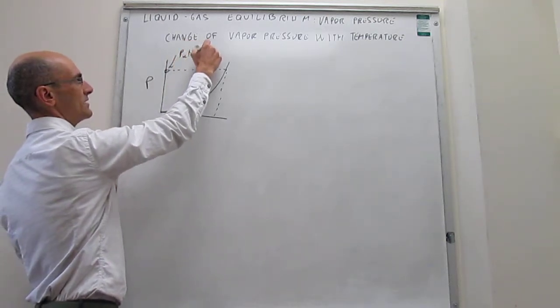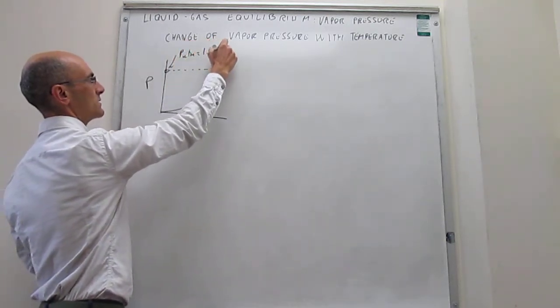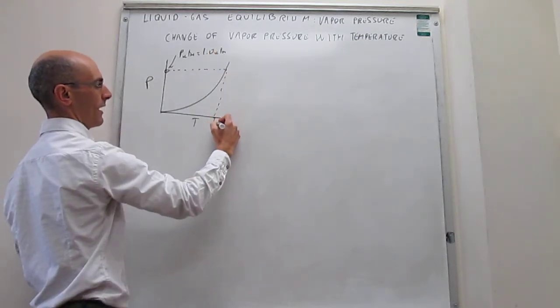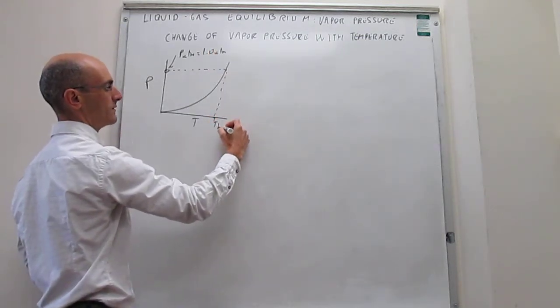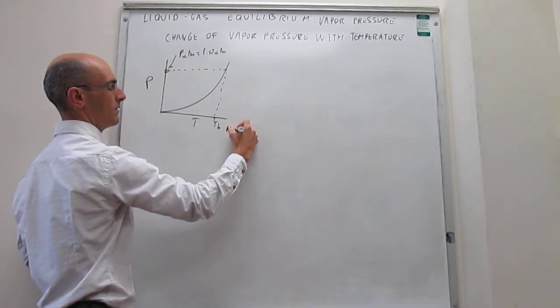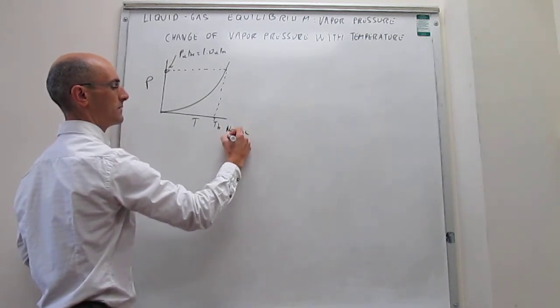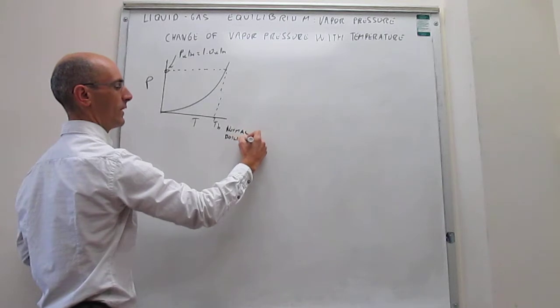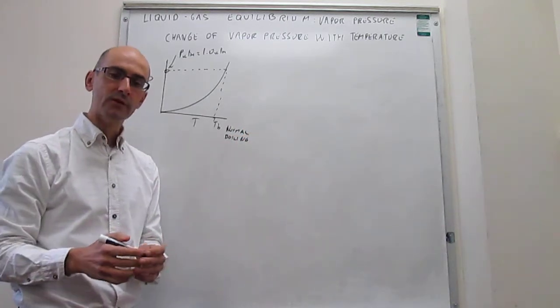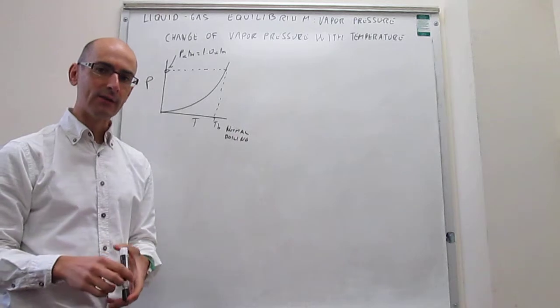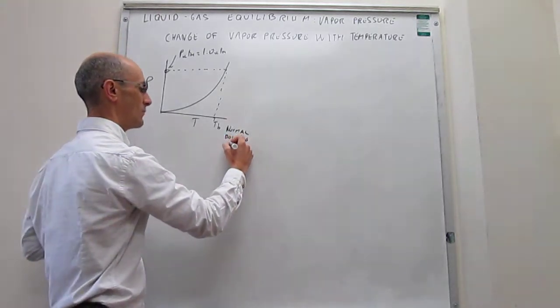So that would be generally 1.0 atmosphere. And when that happens, here we have what we call the normal boiling point of the liquid. So for example, for water, we know that water at 1 atmosphere of pressure boils at 100 Celsius. So that is your normal boiling point.